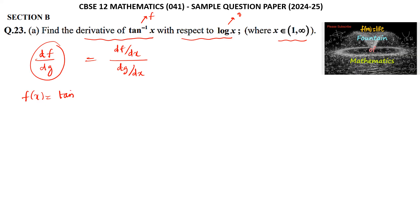Let f(x) equal tan inverse of x. So differentiating, df by dx is equal to 1 upon 1 plus x square. And similarly, g(x) is equal to